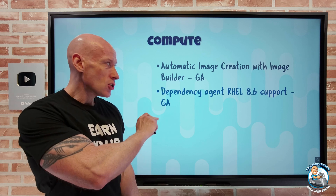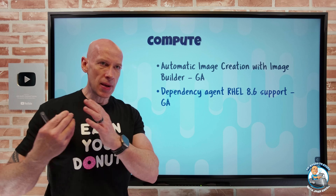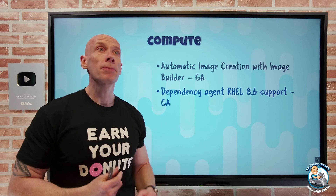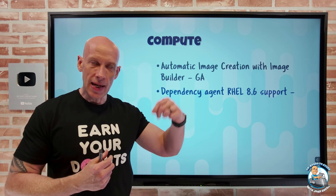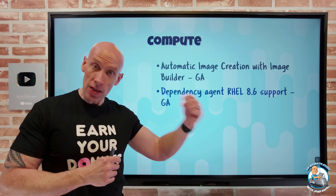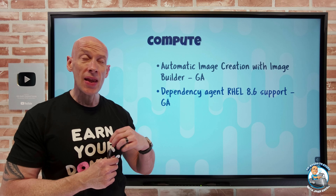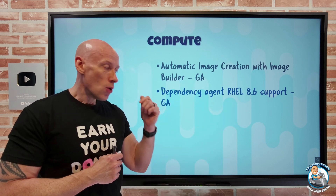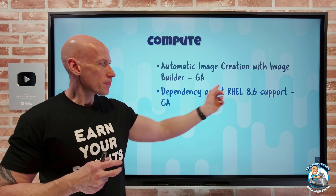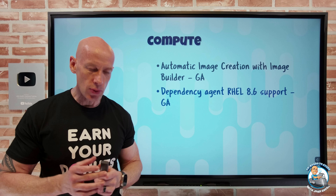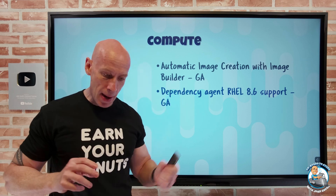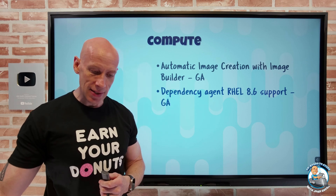The dependency agent now supports RHEL 8.6. There's a big move away from the old Log Analytics agent to the Azure Monitor agent. To get parity with some of the capabilities, there's the updated dependency agent that can tell me about the processes running inside my virtual machines and any external process dependencies. This updated dependency agent now works for RHEL 8.6, helping me get additional capabilities with VM Insights — including process maps and dependency mapping.